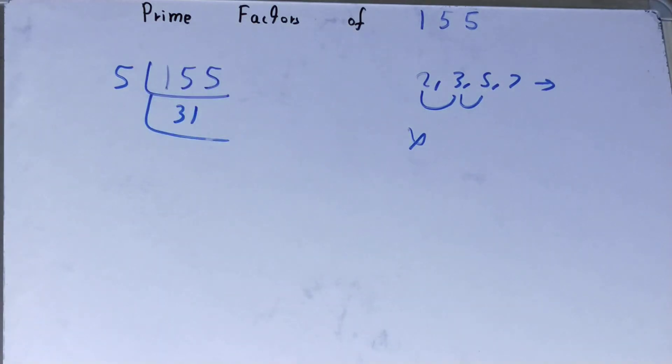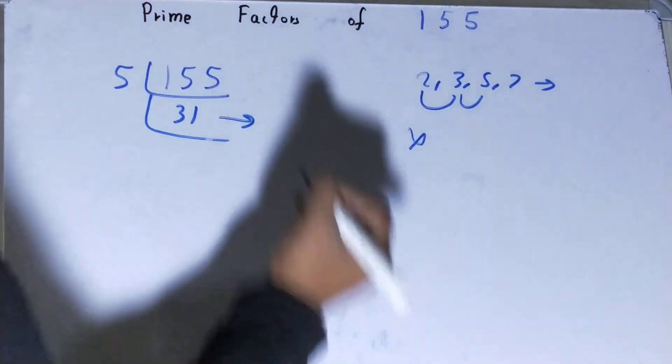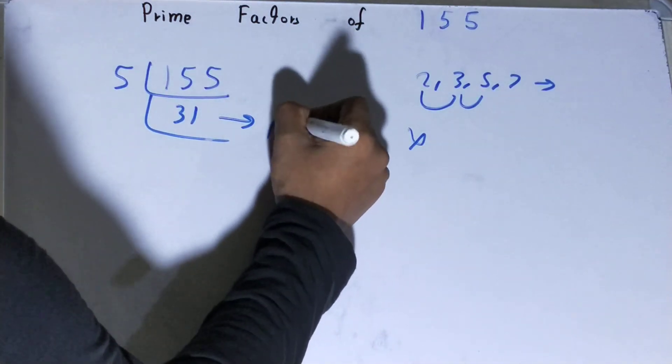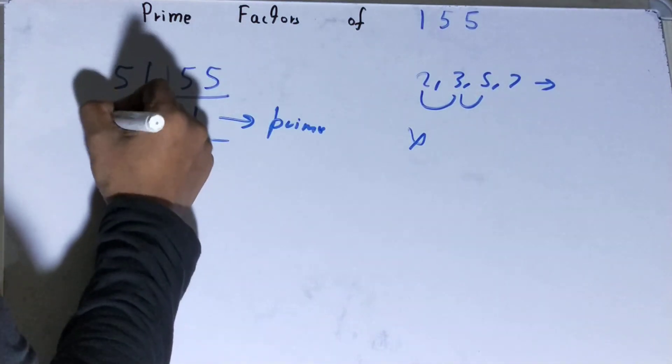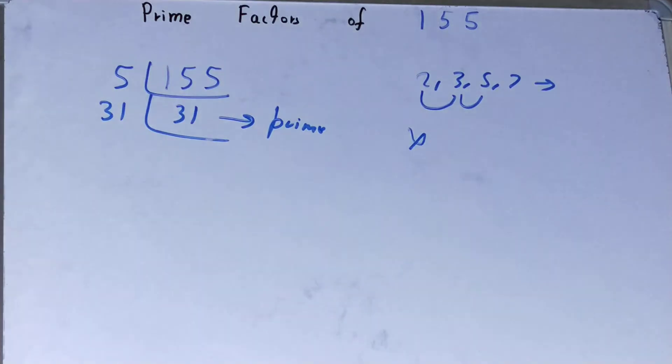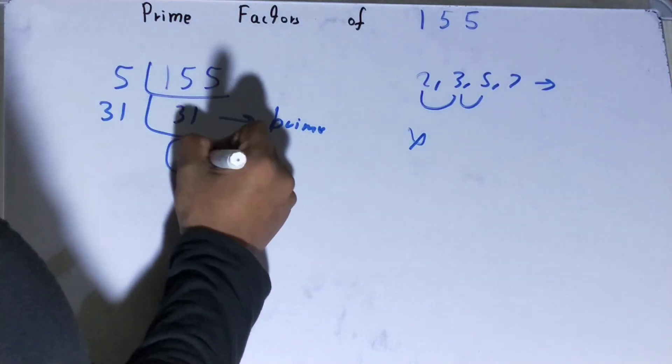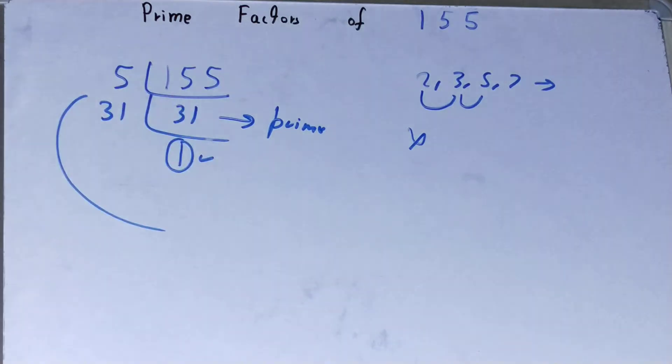Now, further on, is this 31 divisible by 5? Clearly not, and not with any other prime number, because 31 is prime itself. So to divide this 31, you need 31 on the left-hand side also. Once you do so, you'll be left with 1, and once you're left with 1, the work is done.